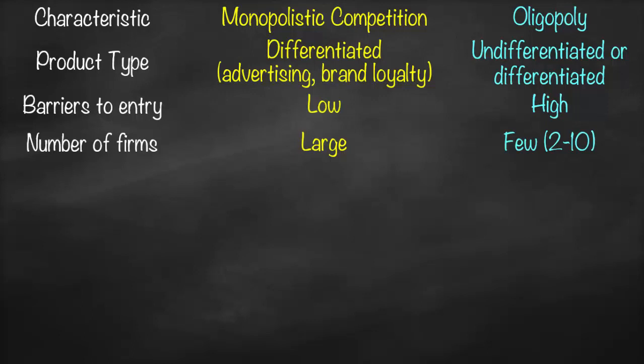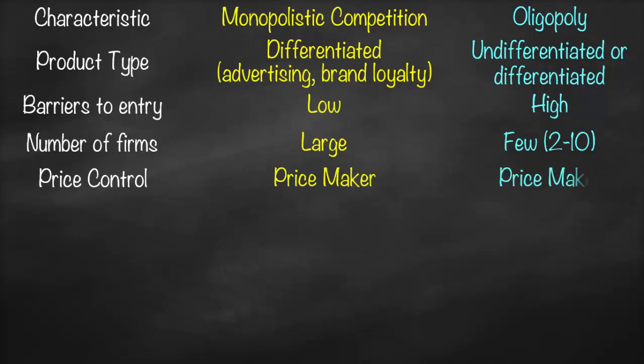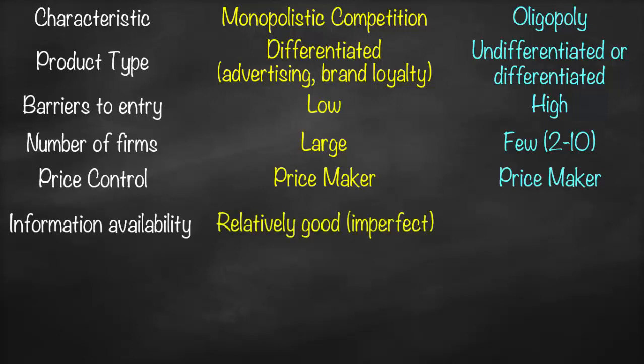If we have two firms in oligopoly, this is called a duopoly. For both monopolistic competition and oligopoly, they have some control over prices — because in monopolistic competition they provide a differentiated product, and in oligopoly there are only a few firms. Therefore, both of them are price makers. For information availability, monopolistic competition has relatively good but still imperfect information.